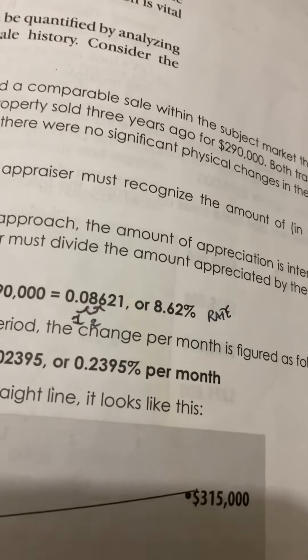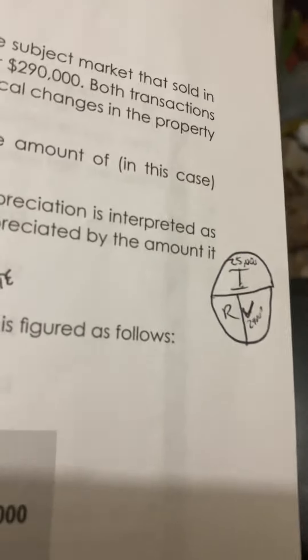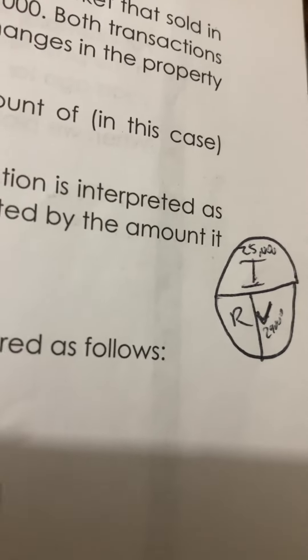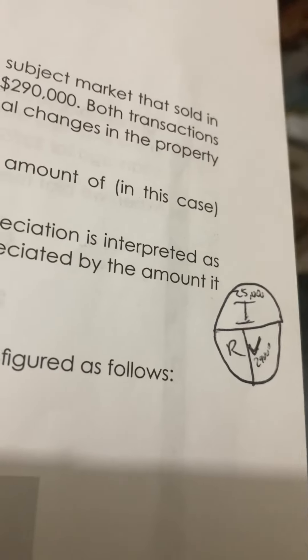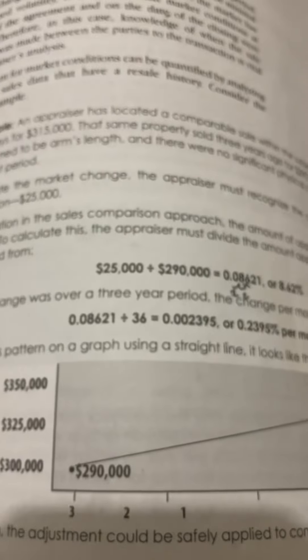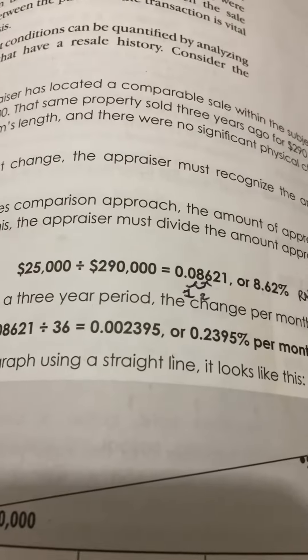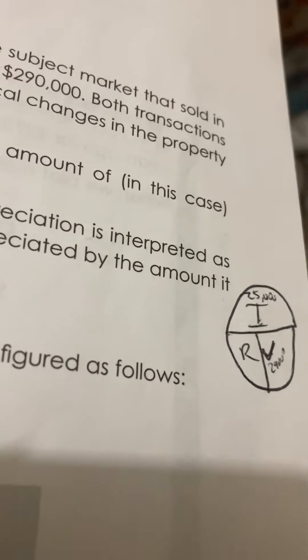Extra notes: the 8.62% was a rate. Also, you have IRV, which stands for Income over Rate and Value. The income was $25,000, the value was $290,000, and you were solving for your rate. You took your income of $25,000 and divided it by the value of $290,000, which gave you 0.08621, or 8.62% — solving for your rate. That's what IRV is.